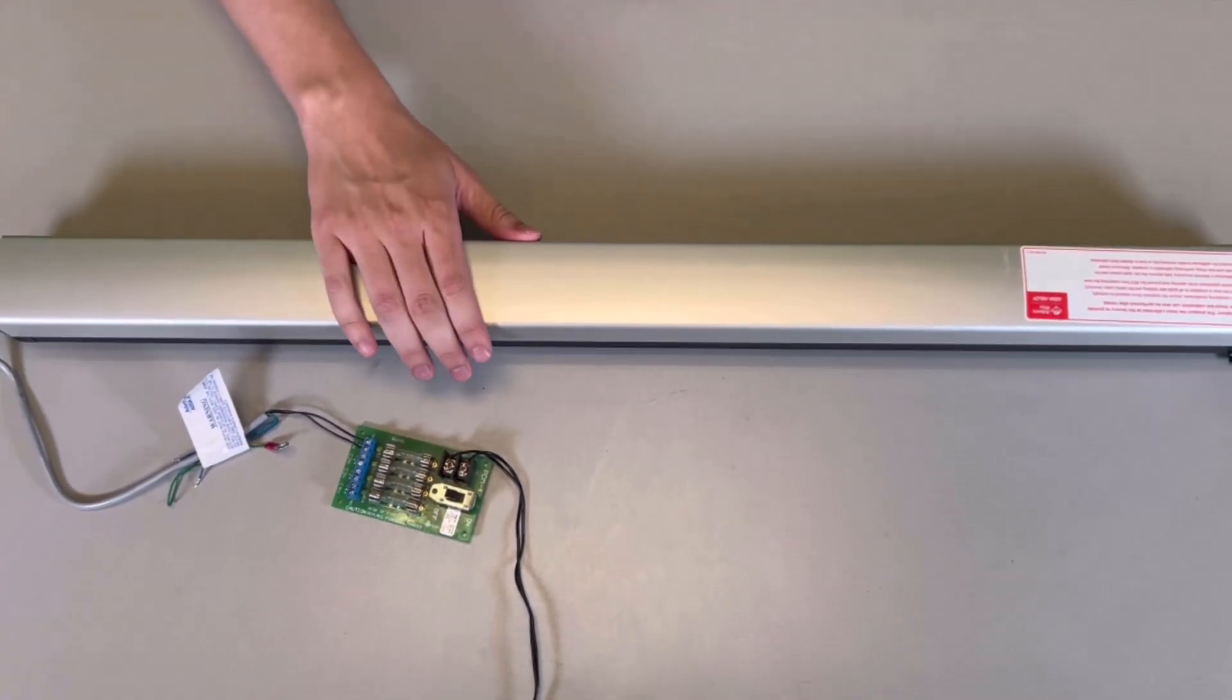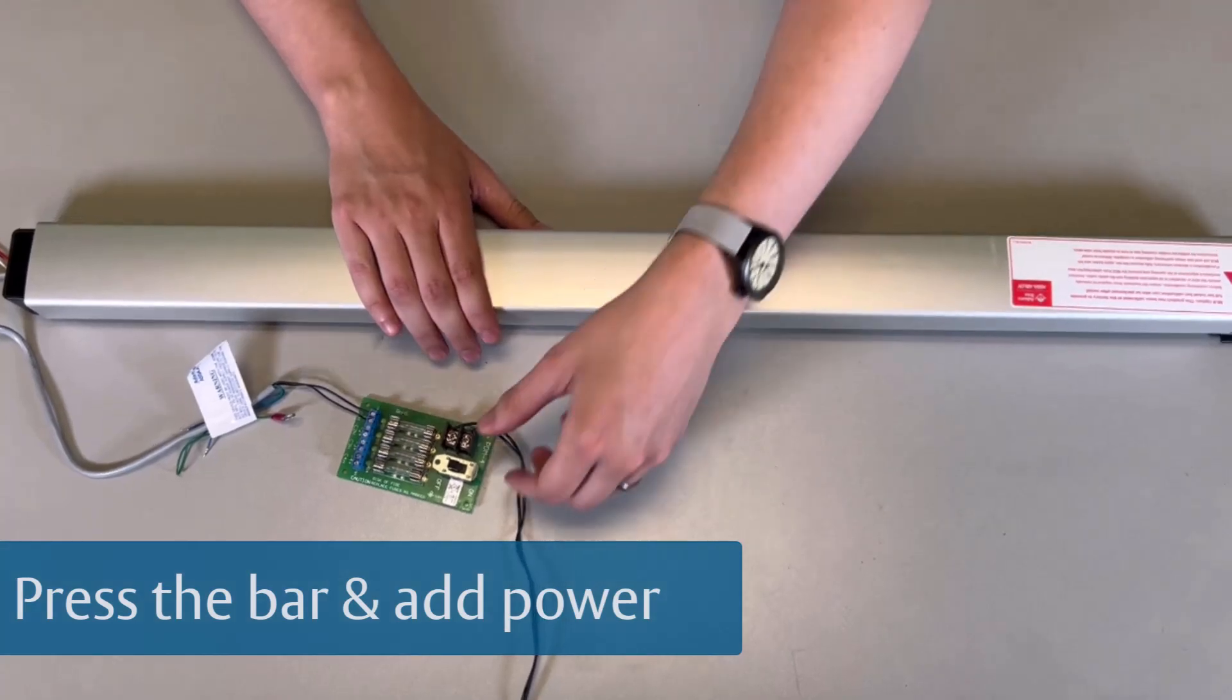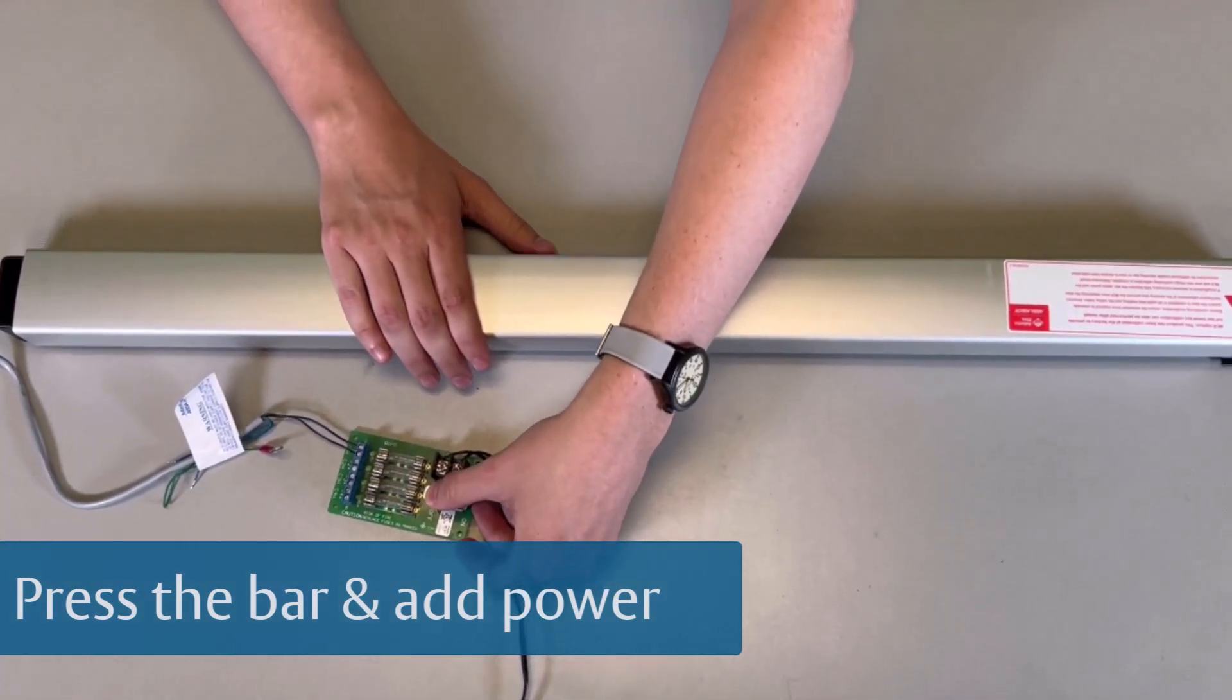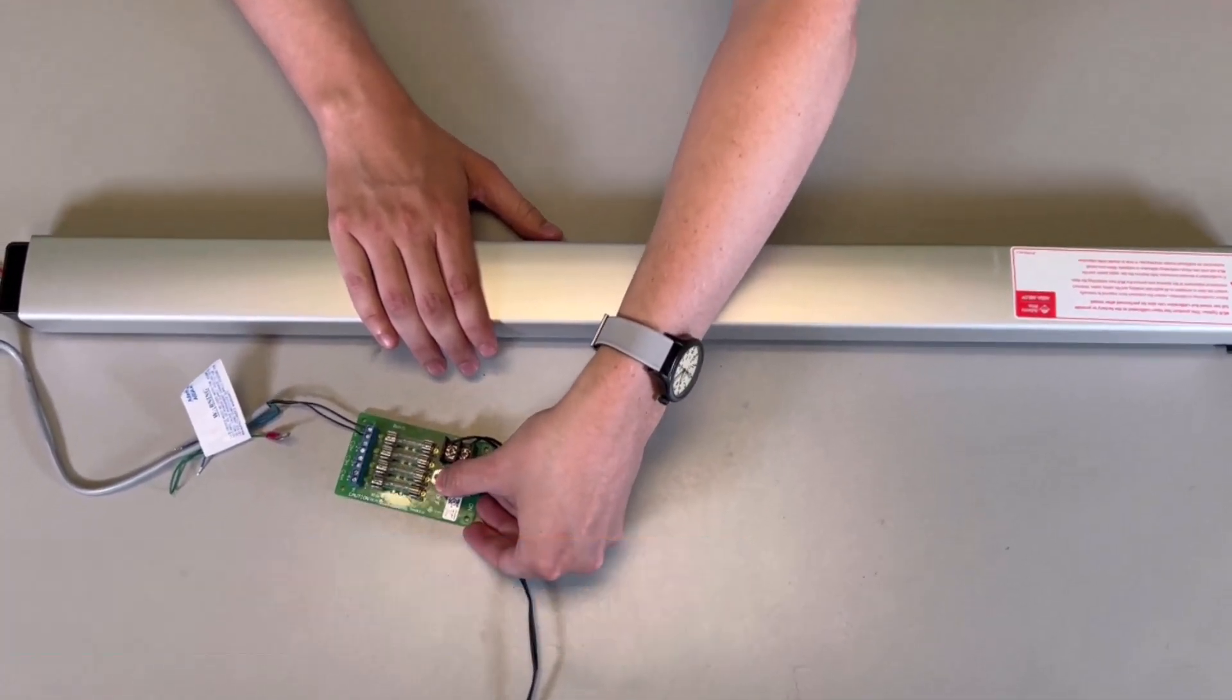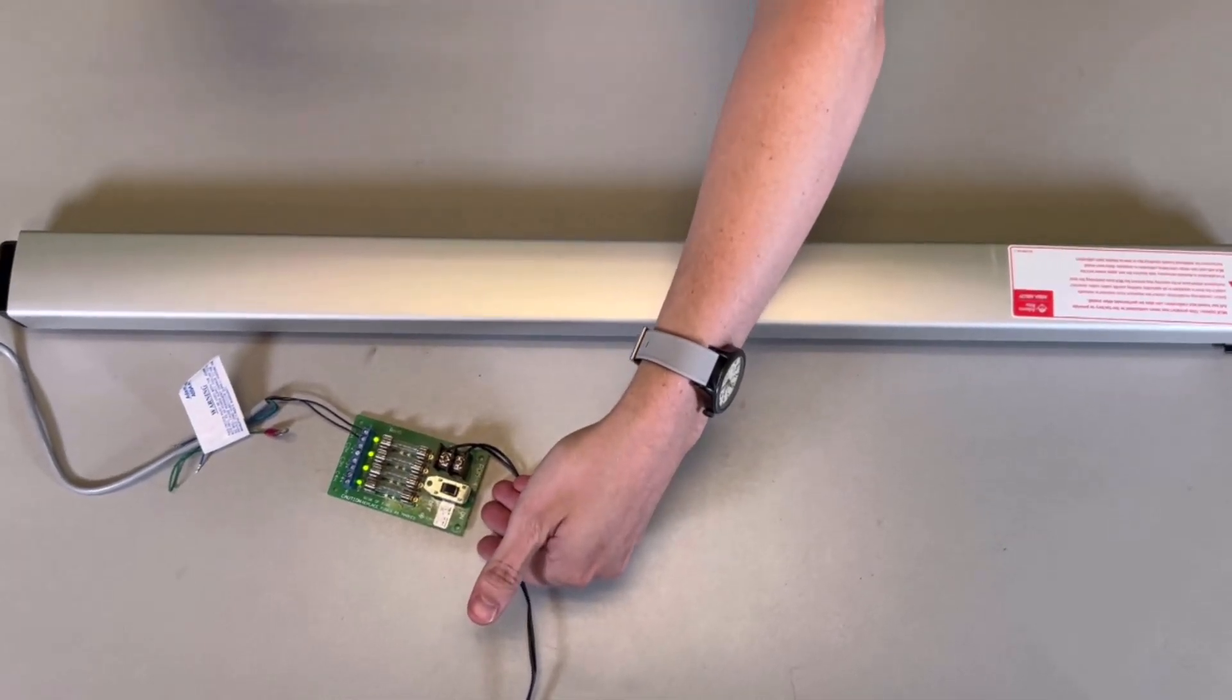To calibrate the MLR device, first press the bar all the way down, then add power to the device. After you hear two chirps, let go of the bar. The bar will be retracted all the way down.